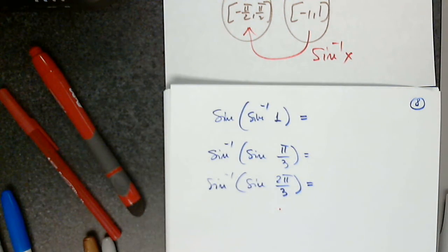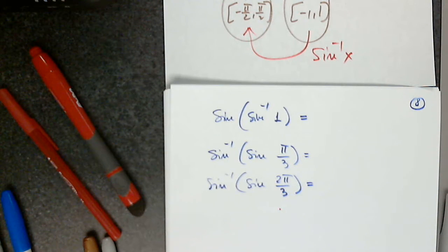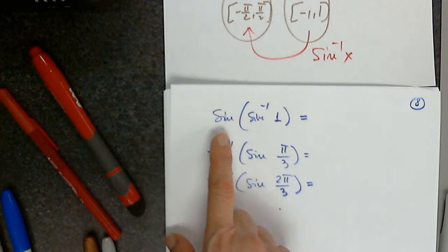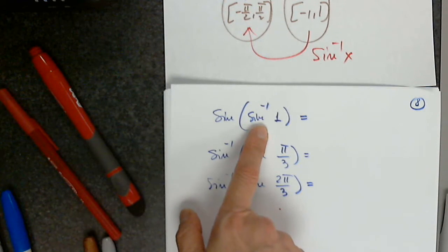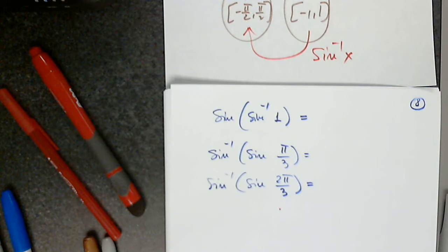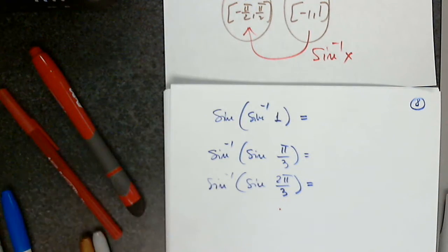Let's discuss the property of inverse functions. So if I apply a function to x, and then I apply the inverse function to the result, what do I get back? Just x. What if I apply the inverse function to x, and then I apply the function? Sine is the inverse of sine inverse, and sine inverse is the inverse of sine. So when I apply sine to sine inverse of 1, sine and sine inverse cancel, and the answer is 1.